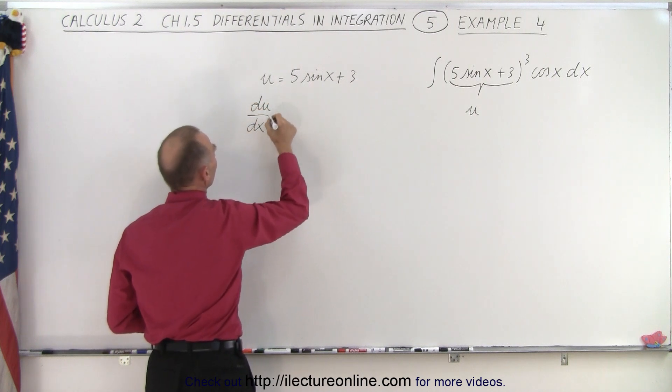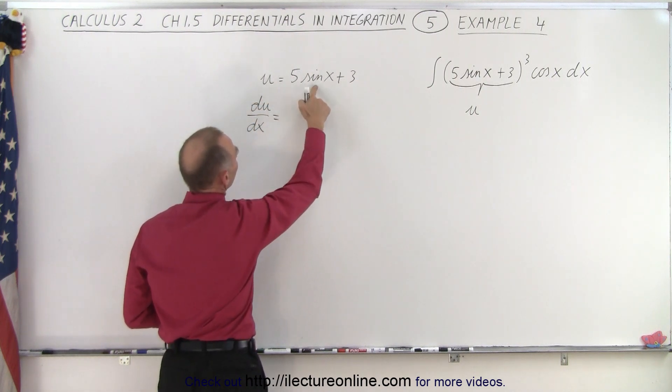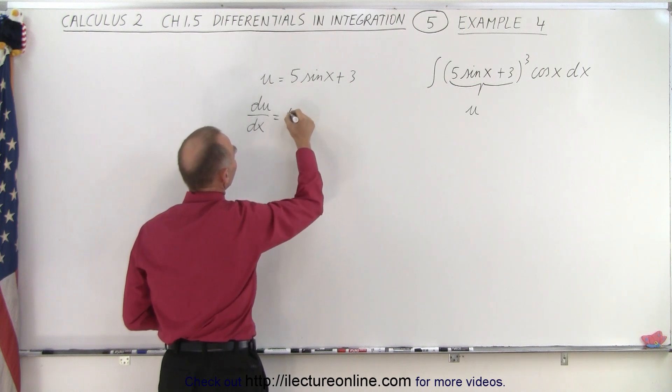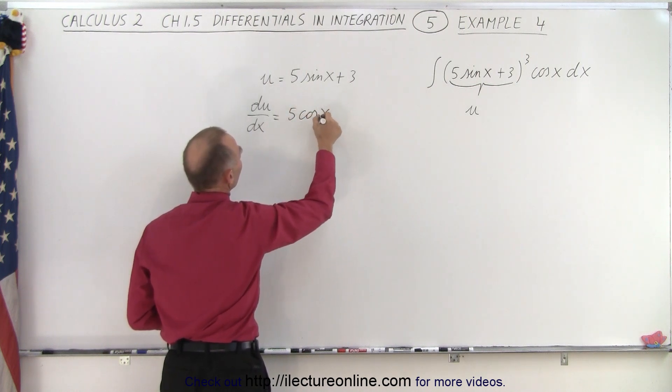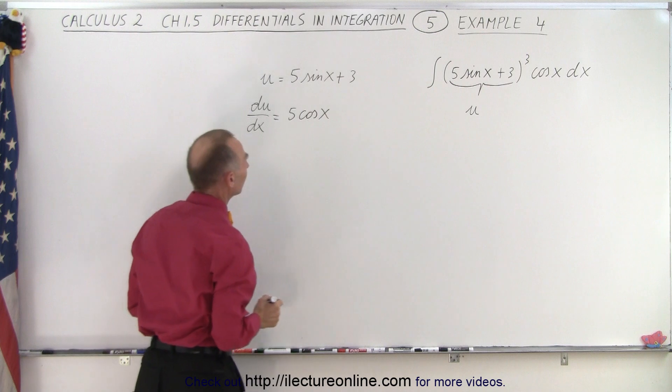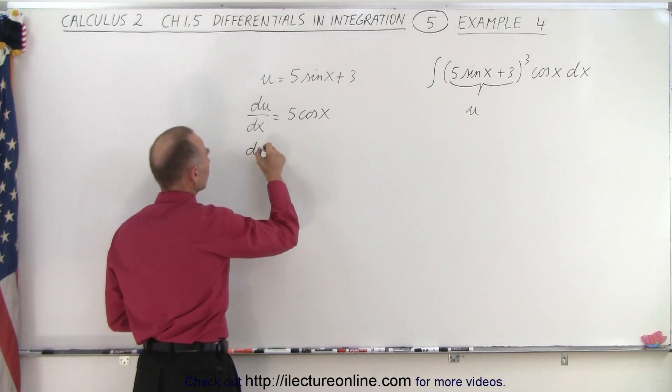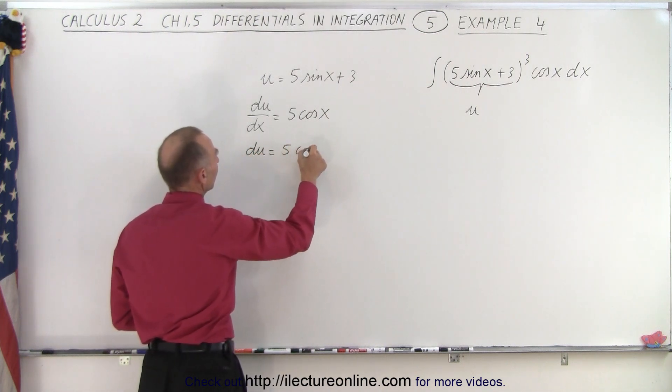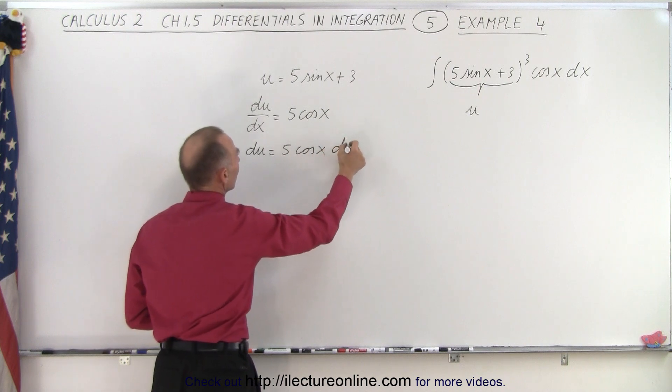the derivative of that with respect to x, is equal to, well, the derivative of 5 sine of x would be 5 times the cosine of x, and the derivative of a constant is 0, and therefore du is equal to 5 times the cosine of x times dx.